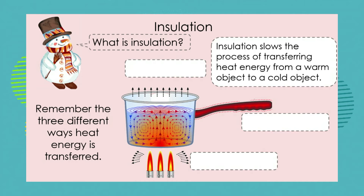What is insulation? Well, let me give you the definition or part of the definition. Insulation slows the process of transferring heat energy from a warm object to a cold object. Remember, that was our definition of what a heat energy transfer is. We've got a hot object or a hot substance, we've got a cooler object, and energy in the form of heat is transferred across from the warmer substance or object to the cooler substance.